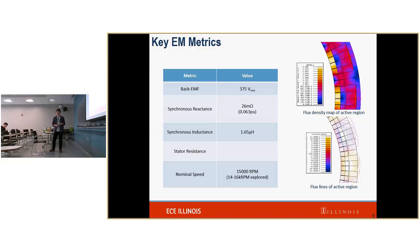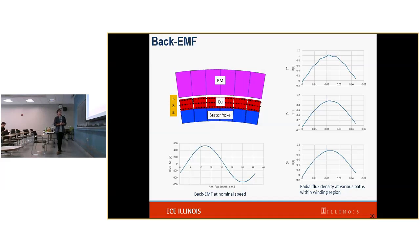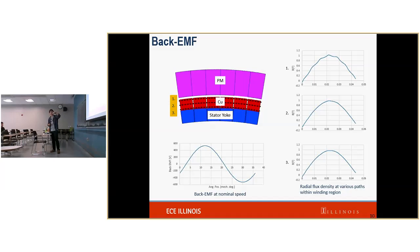After taking this design through FE analysis, we get a back EMF of about 375 volts RMS, about 0.063 per unit of synchronous reactance, negligible steady-state resistance, and nominal speed at 15,000 RPM. What's interesting about our motor is that because we adopt a toothless design, the air gap flux density is pretty sinusoidal, which results in a nearly sinusoidal back EMF. We're excited about that.